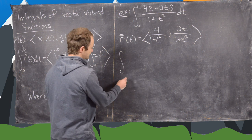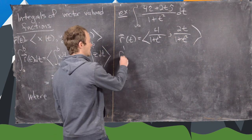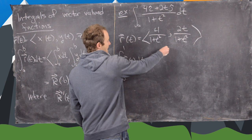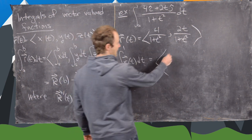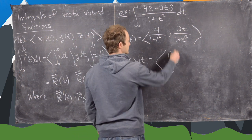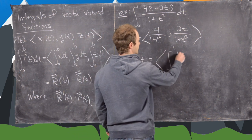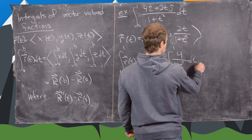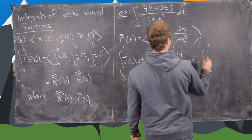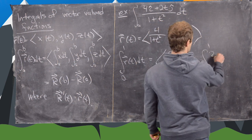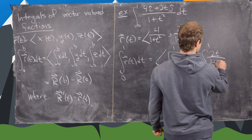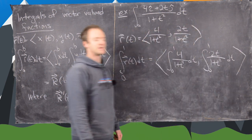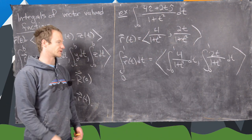So now if we take the integral from 0 to 1 of r of t dt, that's going to be the vector given by the integral from 0 to 1 of 4 over 1 plus t squared dt, comma, the integral from 0 to 1 of 2t over 1 plus t squared dt. So we've got two fairly simple integrals to do.